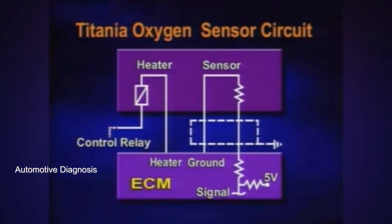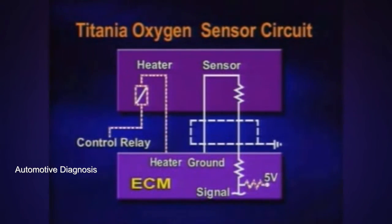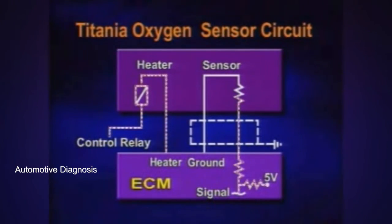The sensor has four terminals. Two of them are for sensor heaters and the rest are for the sensor. Heater power is 12 volts from the control relay and the other wire is controlled by the ECM. The control signal is 10 hertz duty. The terminal for the sensors consists of a signal wire and ground.